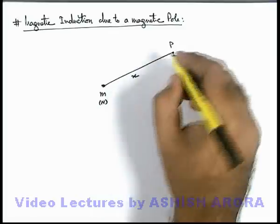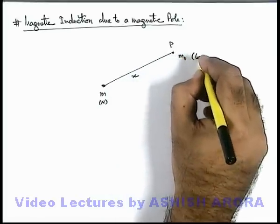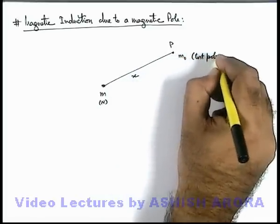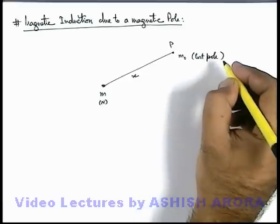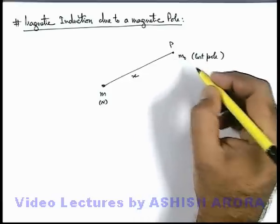For this calculation we place a test pole over here. We can define a test pole as a very small magnitude magnetic strength north pole.